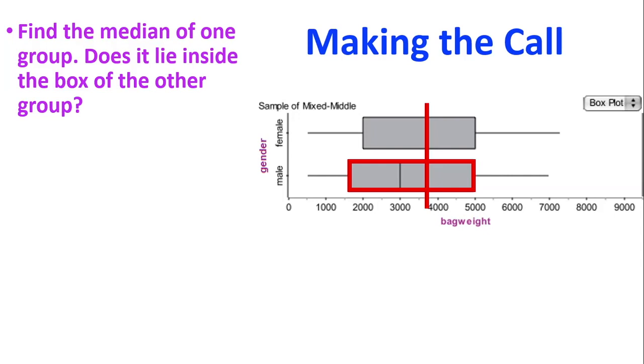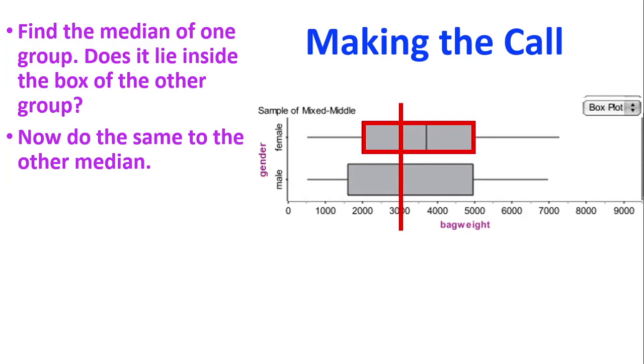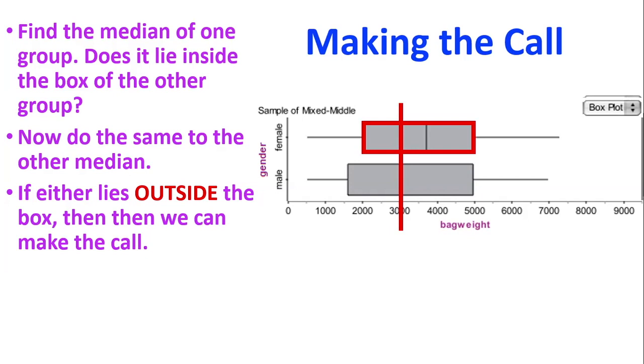Now let's double check with the other median. So that was using the median of the female. Now let's do the same thing for the other median. So here's my median of the males. And there's the box of the females. Does that lie inside or outside the box? And in this case it also lies inside the box. So what it means is that if either of them were outside the box, then we can make the call. But in our case, neither of them lies outside the box. They both lie inside each other's boxes. Which means we cannot make the call.